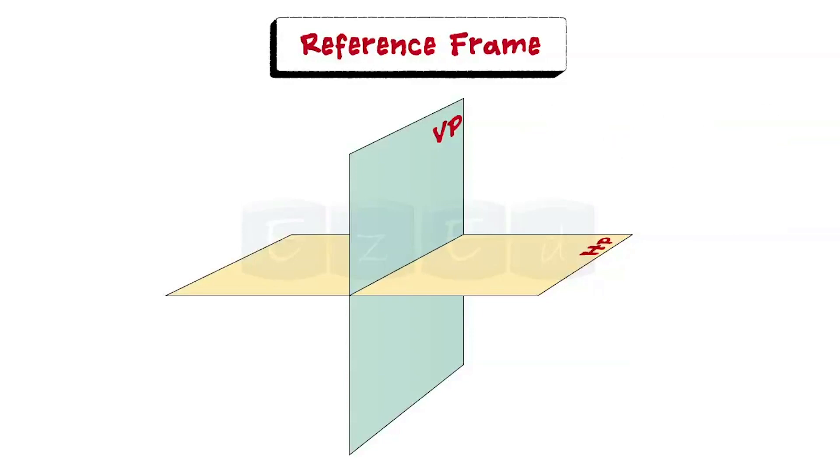And the intersecting line of two planes is called reference line, that is XY. From this reference plane, we get first, second, third and fourth quadrants. The object can be placed in any one of these four quadrants.